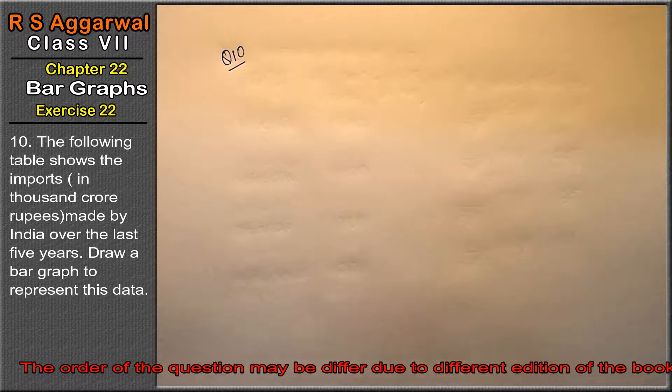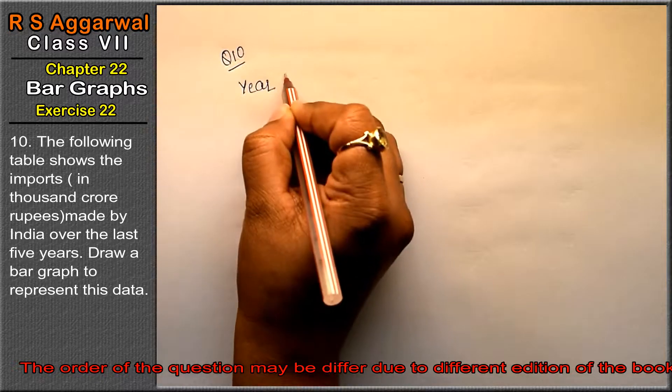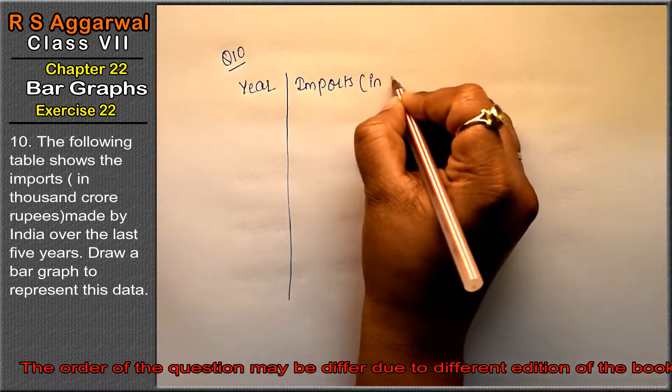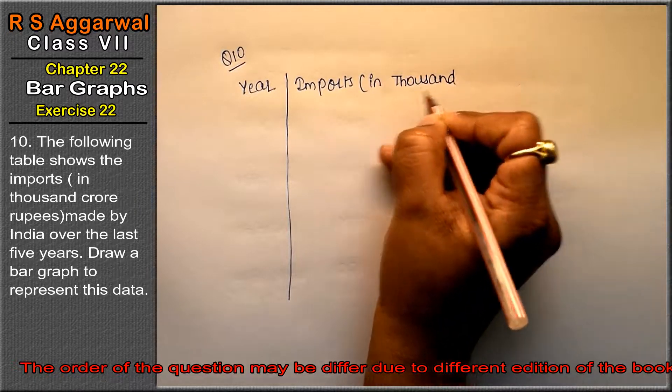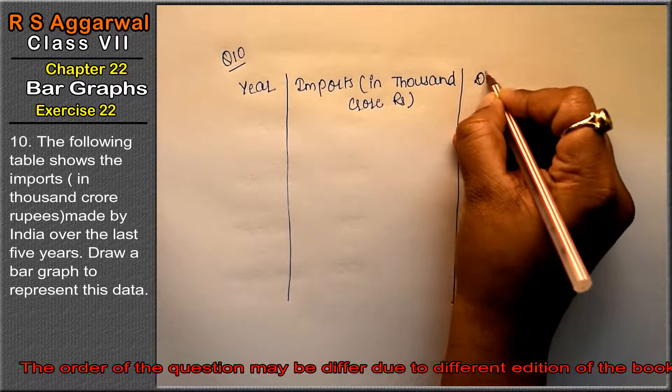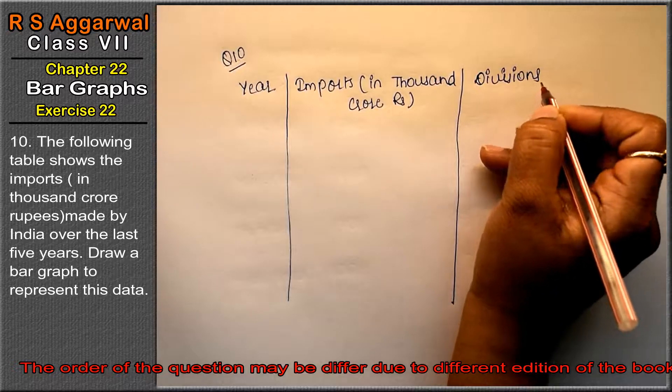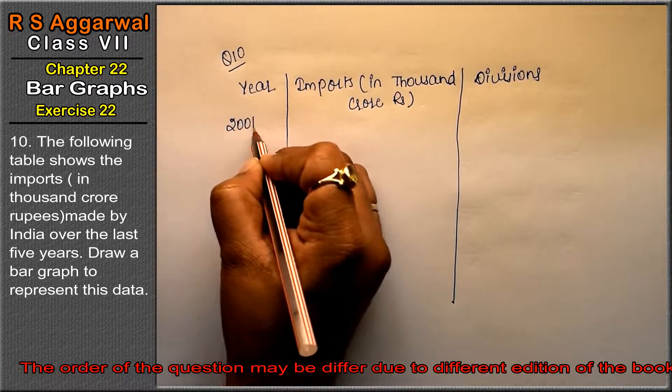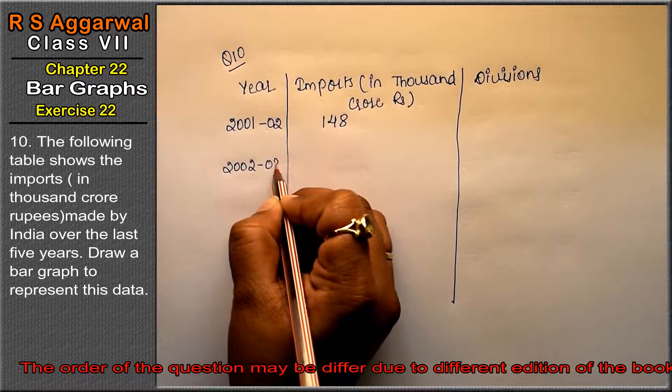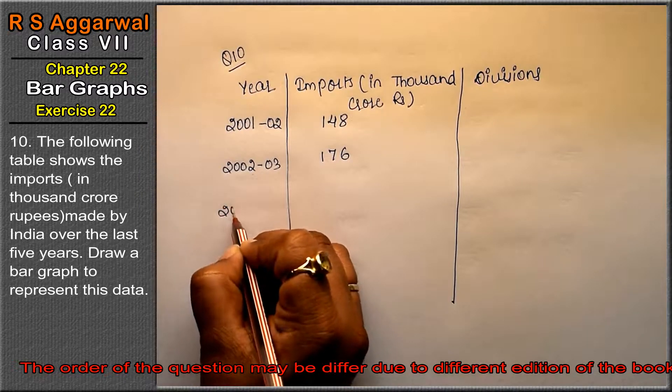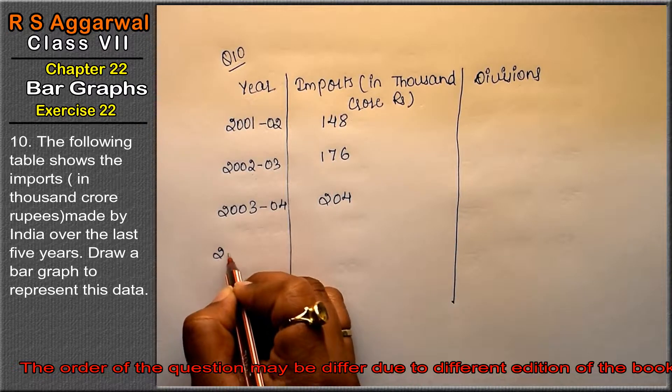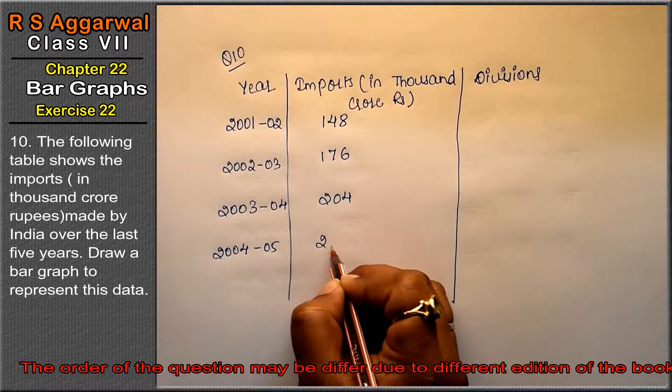First, let's look at the data table. Year, imports in thousand crore rupees, and divisions. 2001-02: 148; 2002-03: 176; 2003-04: 204; 2004-05: 232; and 2005-06: 180.